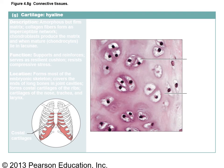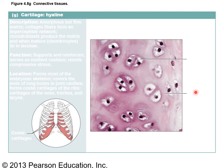Cartilage has very few cells and a tough non-living matrix; the cells sit in little openings called lacunae. There are three types. Hyaline cartilage has no visible fibers — it's found in costal cartilages and the ends of long bones, and is what you encounter as gristle in meat. The word hyaline means ground glass because it looks very uniform with no visible fibers.